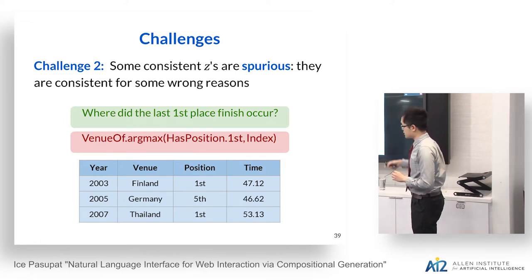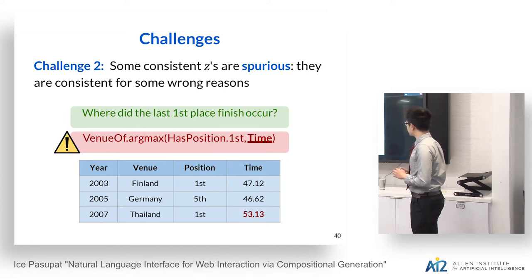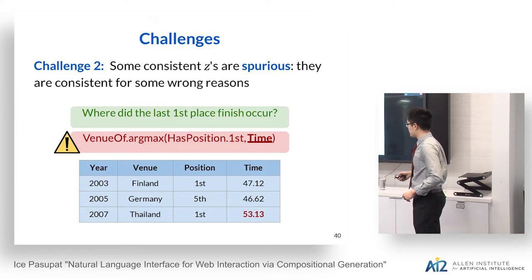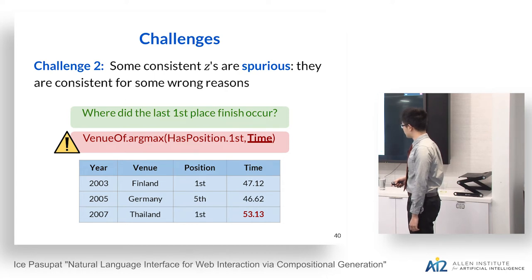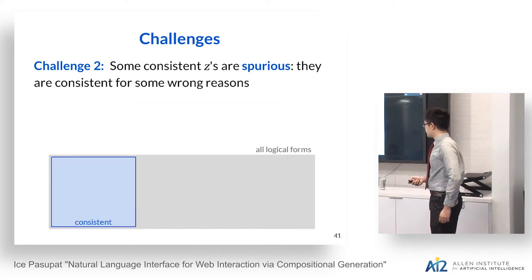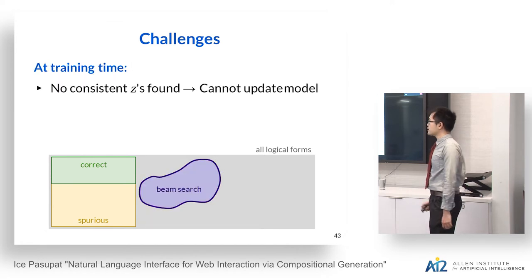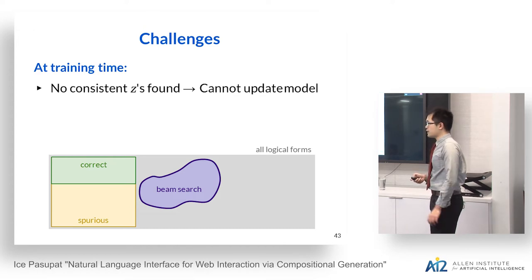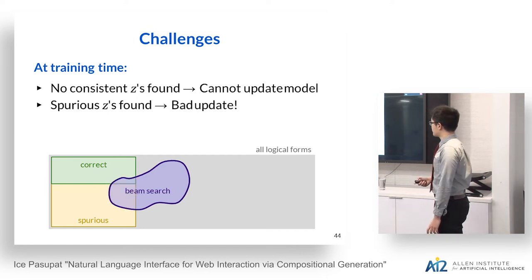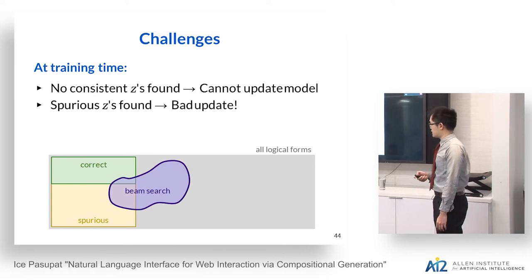Going back to our example, here is the correct logical form and a spurious one. The spurious form finds the row where the time column has the highest number — which happens to be the last row — and gets the correct answer, but it doesn't follow what the question is asking. At training time, if we find no consistent logical forms, we can't update. If we find many spurious logical forms, we update toward them, leading to bad updates.